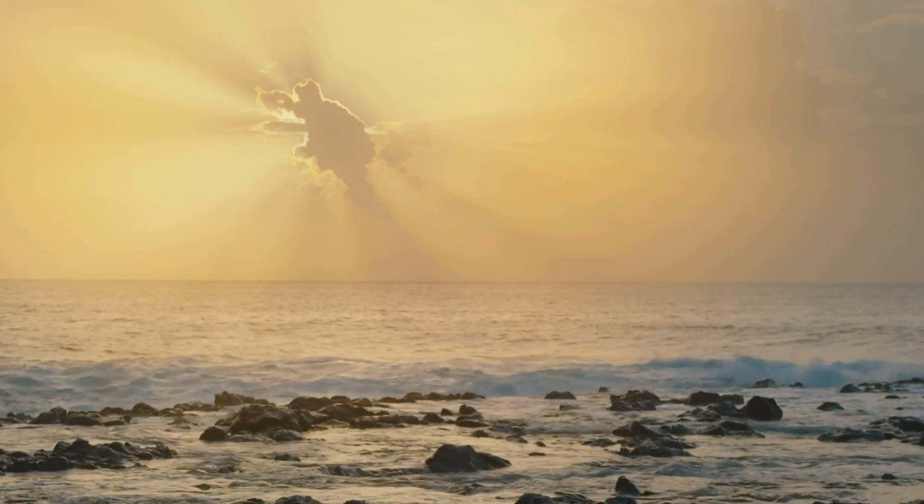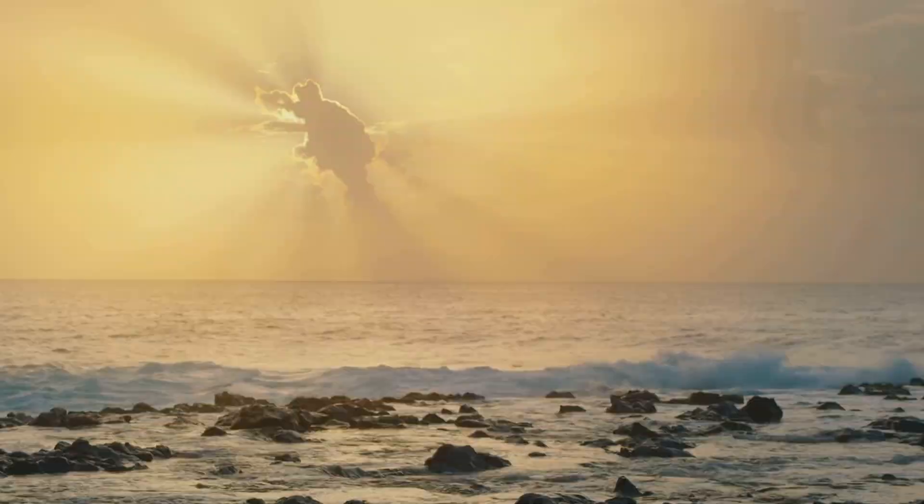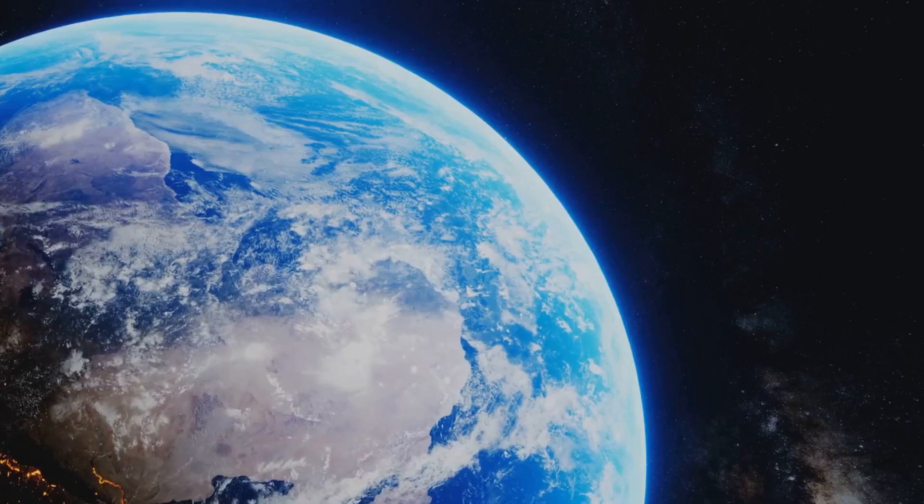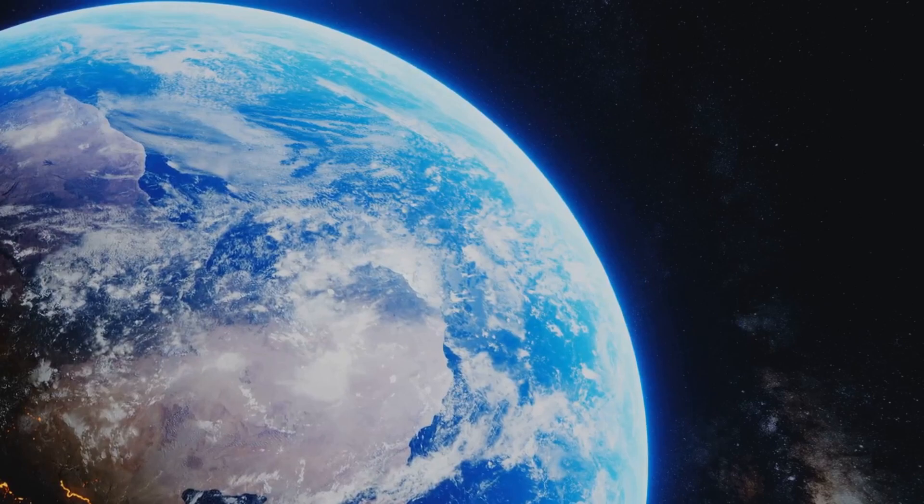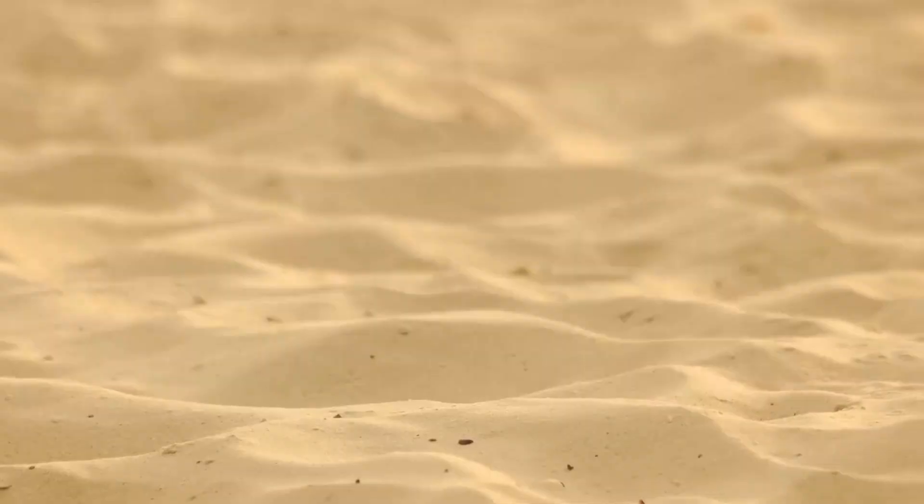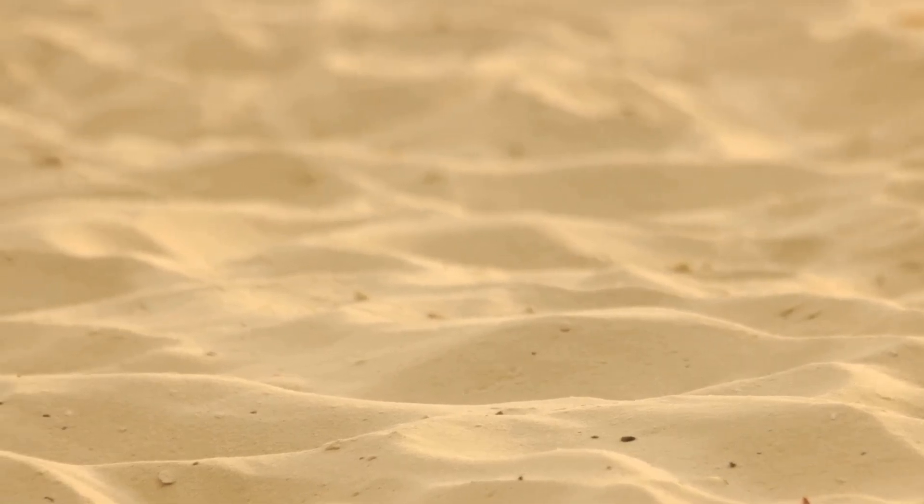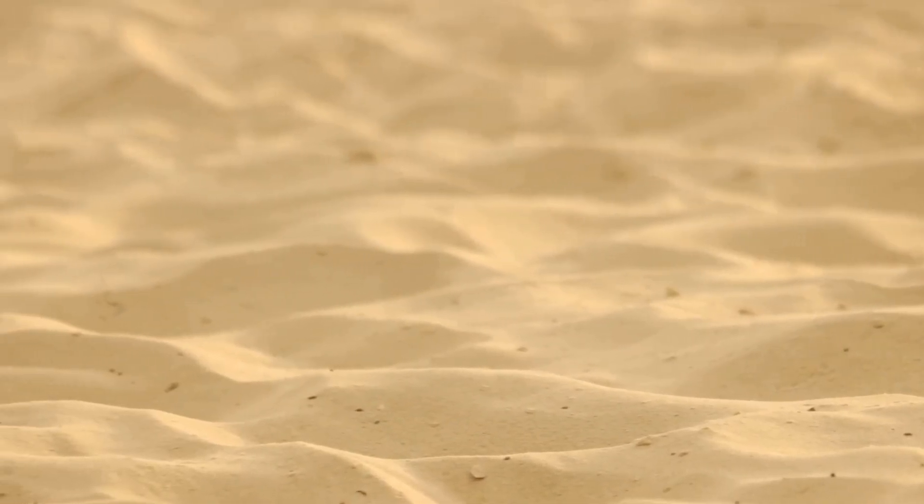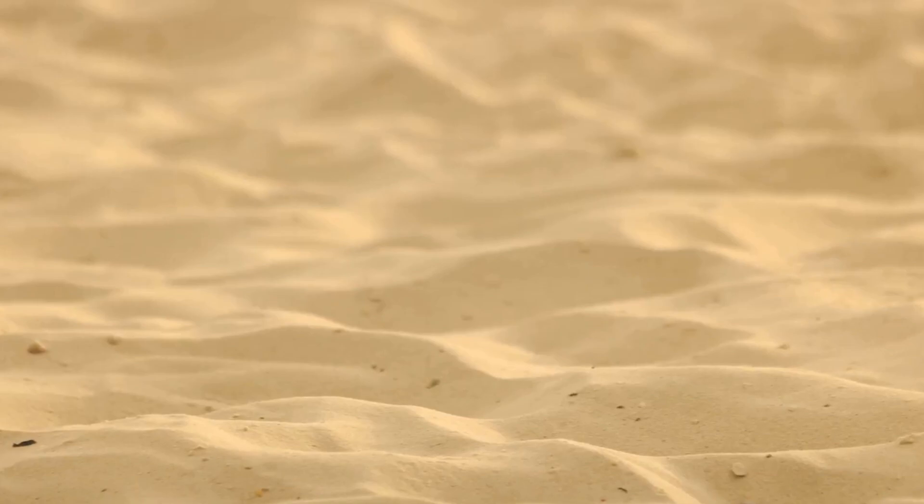Imagine holding a grain of sand. Pretty small, right? Now think about a beach. That grain of sand is like our planet Earth and the beach represents our galaxy, the Milky Way. But wait, it doesn't stop there. There are more galaxies in the universe than grains of sand on that beach you're imagining. Mind-boggled yet?